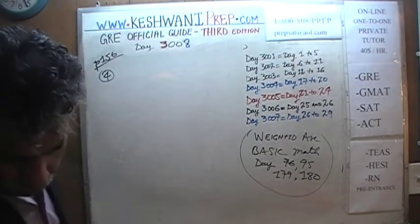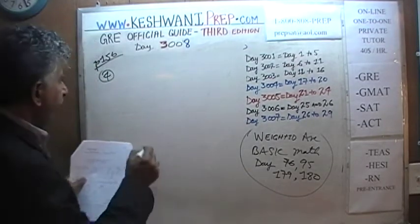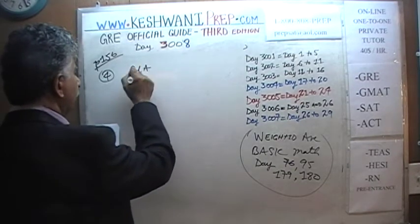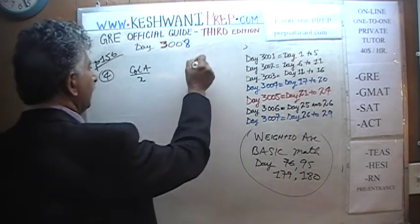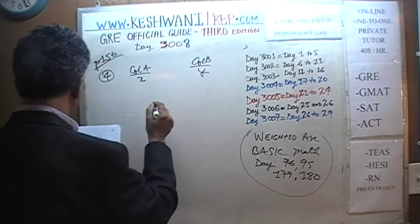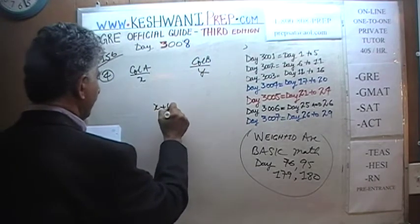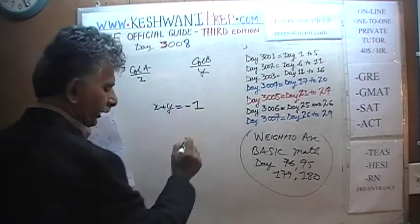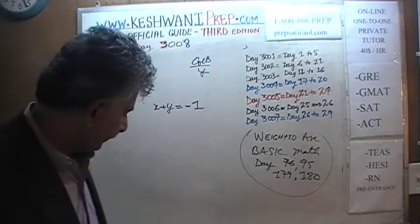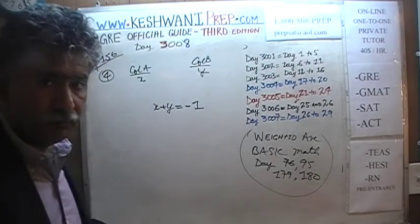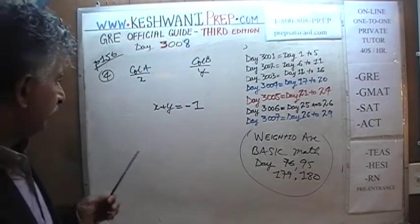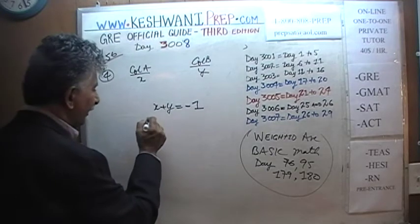In problem 4, we are asked to compare X versus Y. Column A is quantity X, Column B is quantity Y. We are told that X plus Y equals negative 1. The simplest, quickest, most economical way here is to just plug in numbers — make up numbers so that the sum is negative 1.